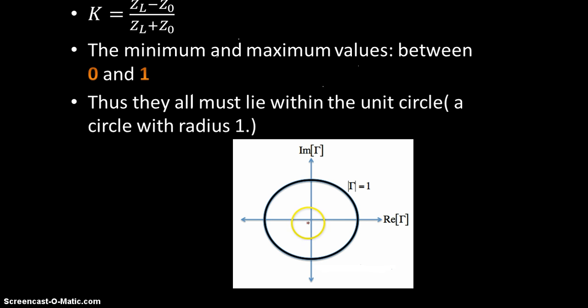This is how a reflection coefficient plane looks like. The value at the intersecting vertical axis and horizontal axis, the intersecting value is 0 and the maximum value it can take is 1. This is a unit circle. You can see that it has an imaginary axis and a real axis. So all of the possible values of K should fall within this region.